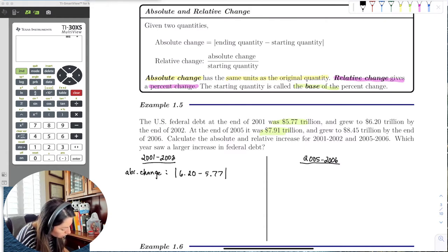OK, so doing that, we would get 0.43 because it would be 0.23 plus 0.20. Again, trillion dollars.